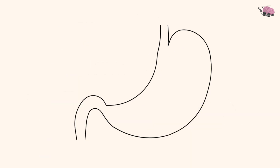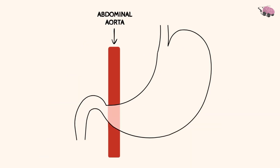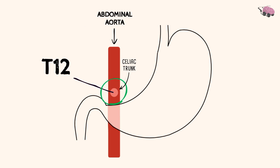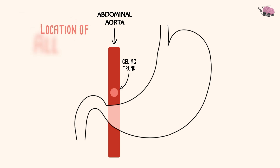Now let's draw on the abdominal aorta. Here we'll focus our attention on the celiac trunk at the level of T12. Draw a circle right over here. All the arteries discussed today will arise from here. It has three branches in total.